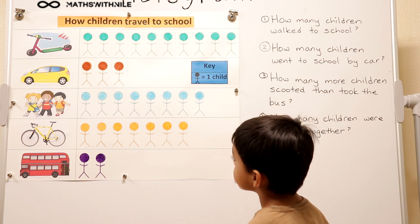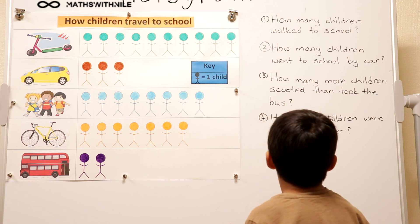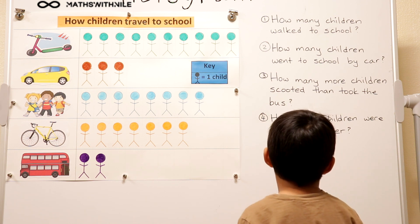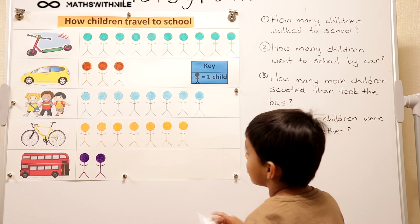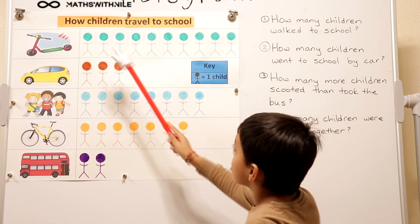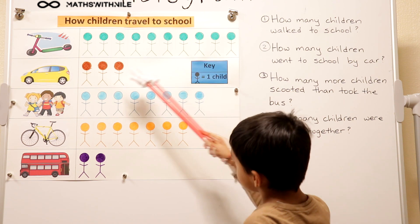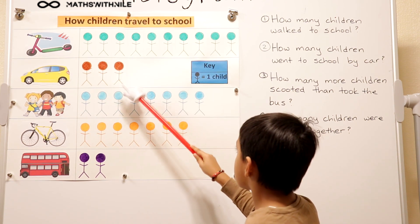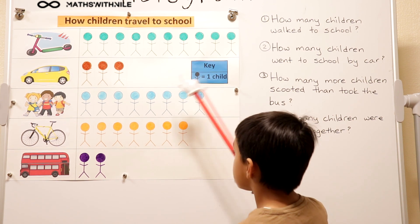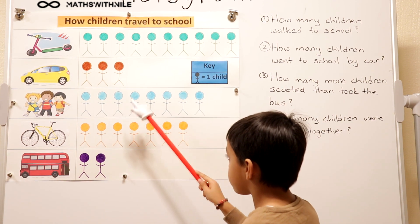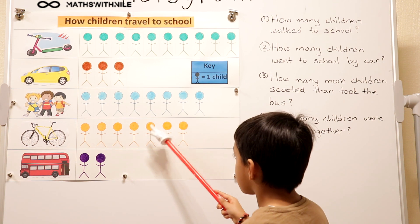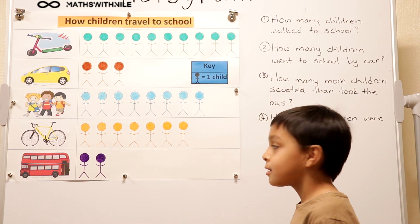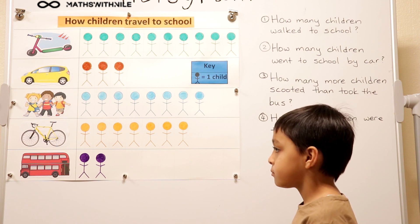What about the last question? What does it say? How many children were there altogether? So in total... 10, 11, 12, 13, 14, 15, 16, 17, 18, 19, 20, 21, 22, 23, 24, 25, 26, 27, 28, 29, 30. So there were 30 students in all. Very good.